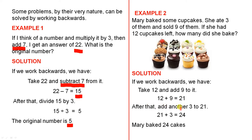After that, add another 3 to 21. Because when you eat 3, that's subtraction. So in other words, the opposite of subtraction is addition. So 21 plus 3 gives us 24. So Mary baked 24 cakes. So they were the original number of cakes that were baked.